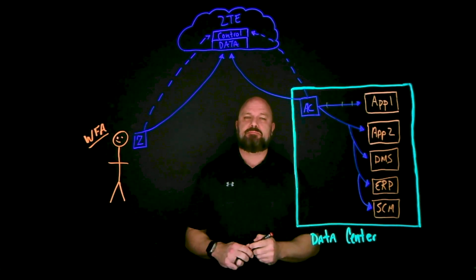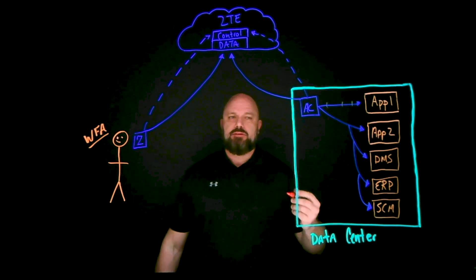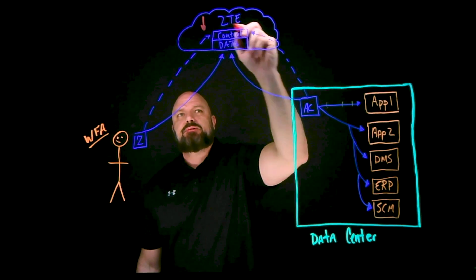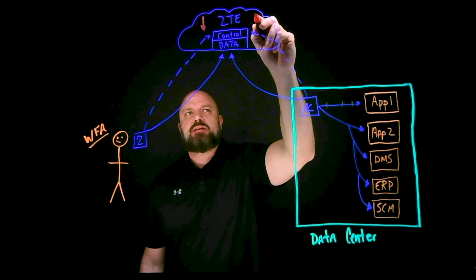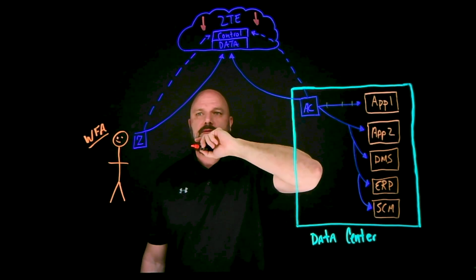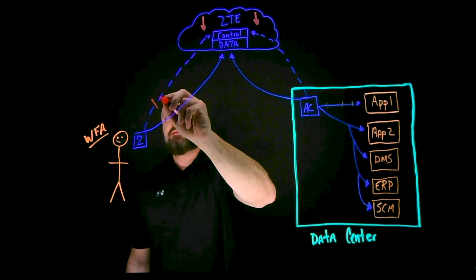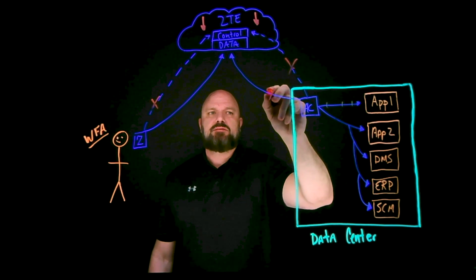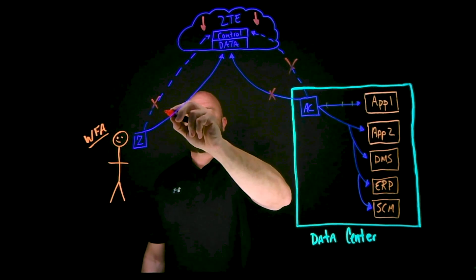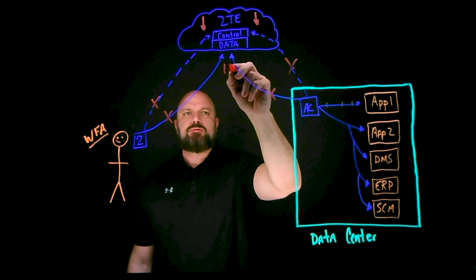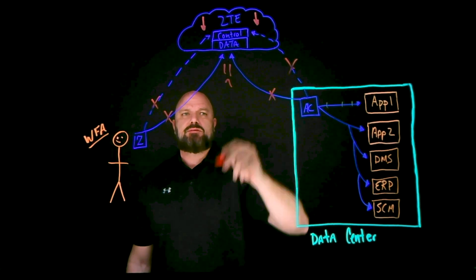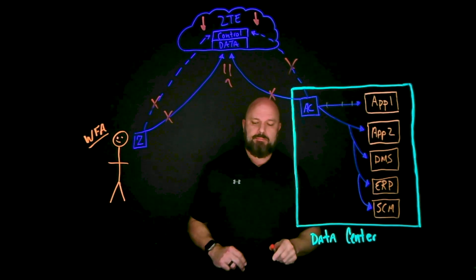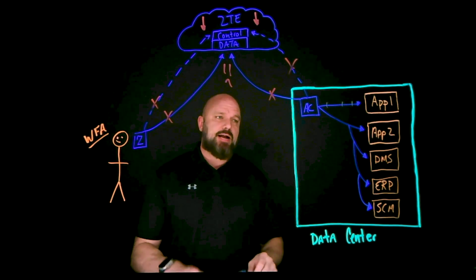What would happen if we had a catastrophic problem — the Zero Trust Exchange goes down? Not just the data plane but the control plane as well, meaning the client connector, the app connector, and both channels are all down. Big old sad face. What do we do?